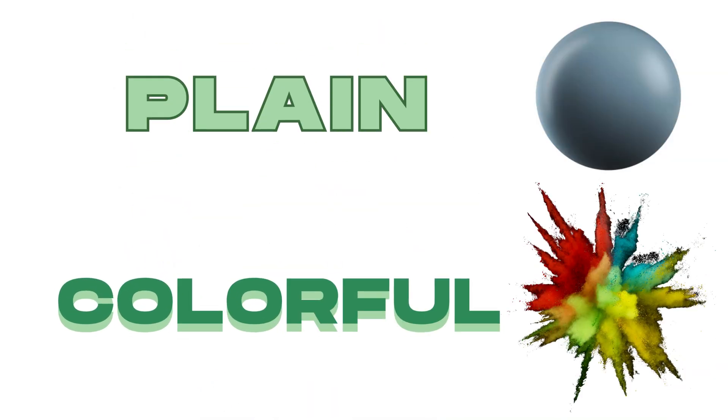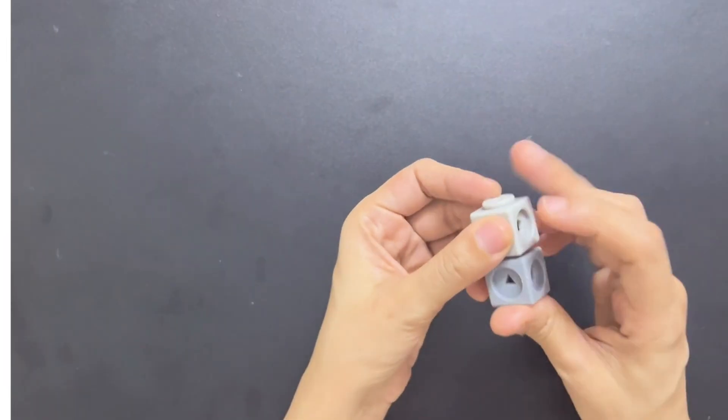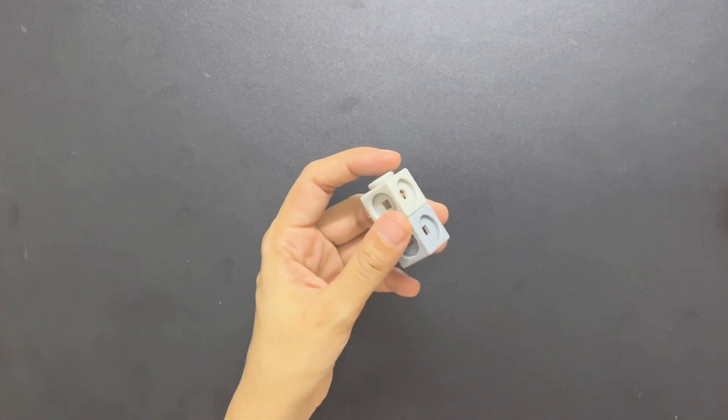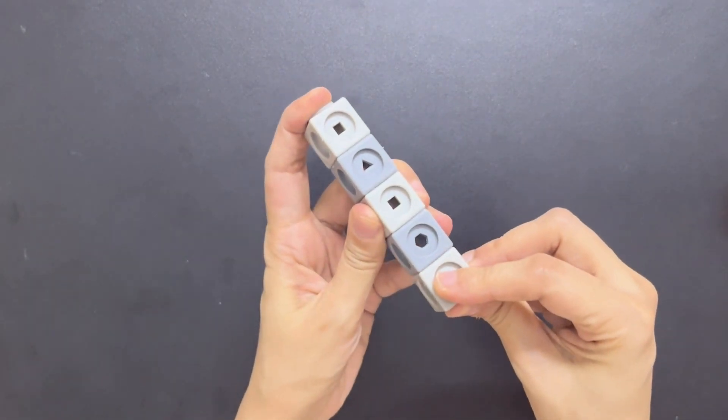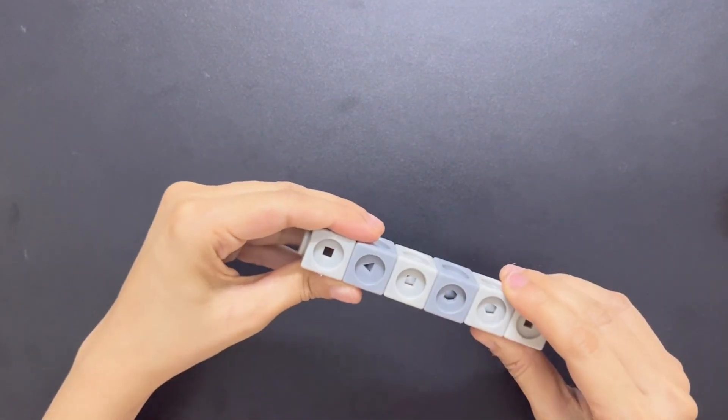Plain, colorful. The third opposite we will learn are plain and colorful. We'll be making a row of plain number blocks with white and gray colors, and a row of colorful number blocks with special rainbow colors.